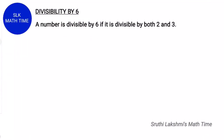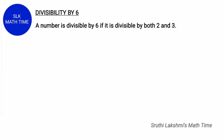Let's see the divisibility rule for 6. A number is divisible by 6 if it is divisible by both 2 and 3, because 6 is a multiple of 2 and 3. The divisibility by 6 rule is a combination of the rules for 2 and 3.